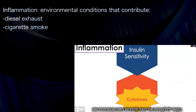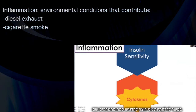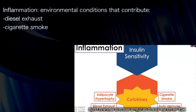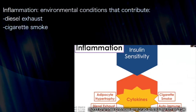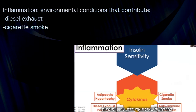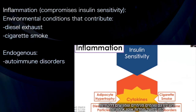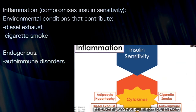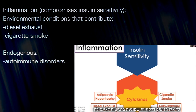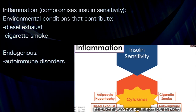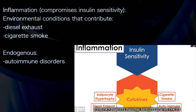With regards to the inflammation, I just wanted to highlight some of the primary inputs. We have environmental stimuli like diesel exhaust particles and cigarette smoke. And then we have endogenous stimuli like autoimmune disorders, for example. All of these are known to increase inflammation, which is then known to compromise insulin sensitivity.